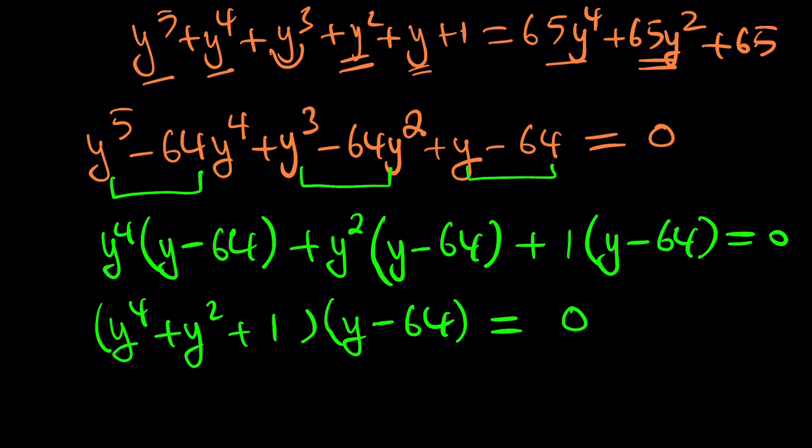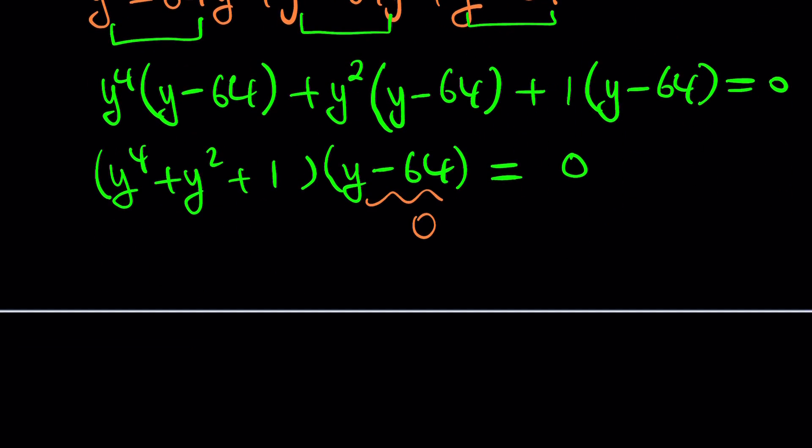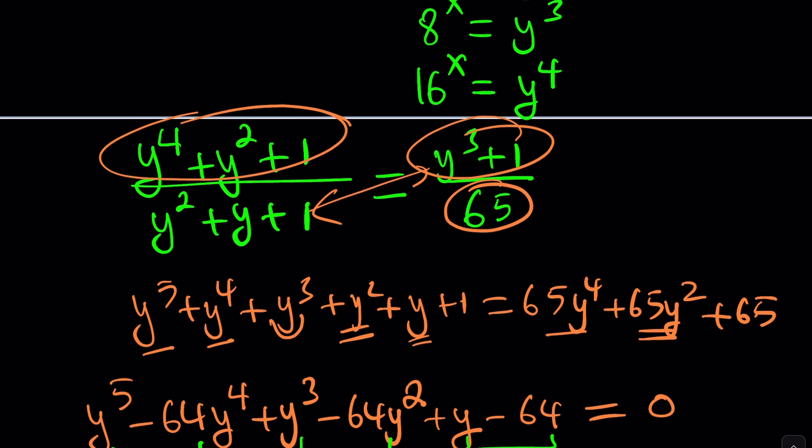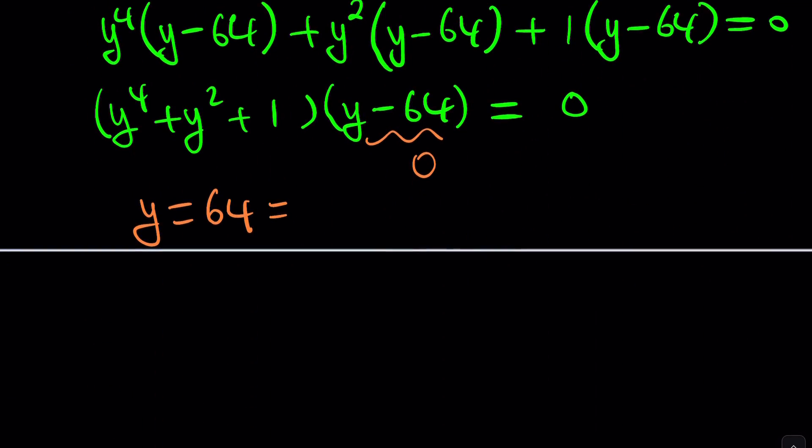This means that each factor can be 0. If this is 0, that should be the easiest one: y equals 64. And since we also know that y is 2^x, we can set this equal to 2^x. And this implies, because 64 is 2 to the sixth power, x equals 6. So 6 is a solution. Do you want to check that? Go ahead and plug it in.